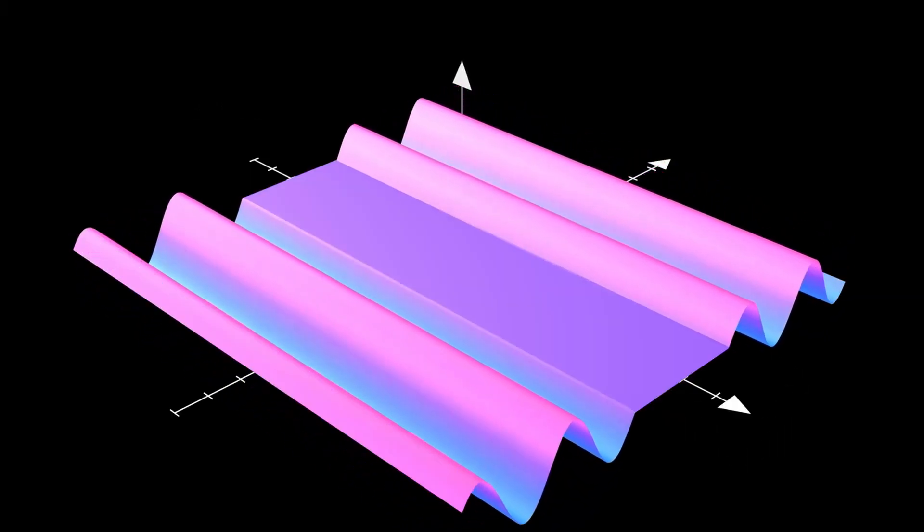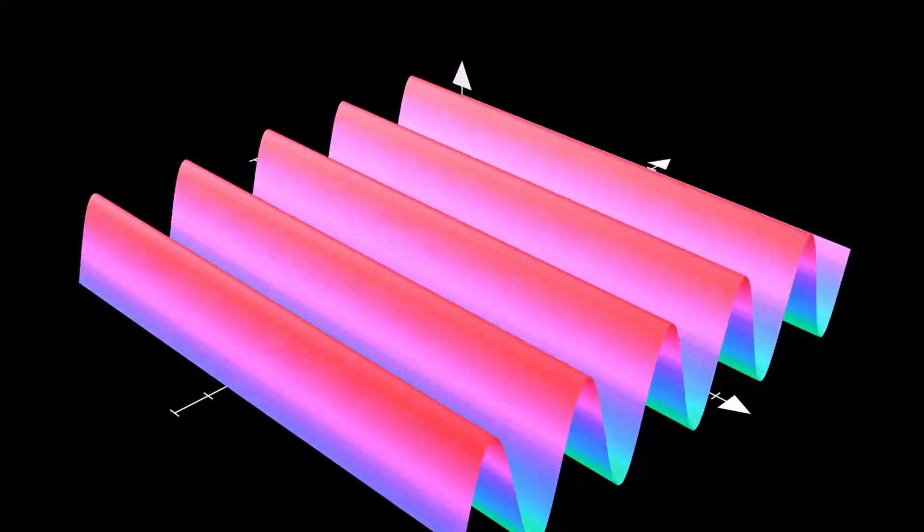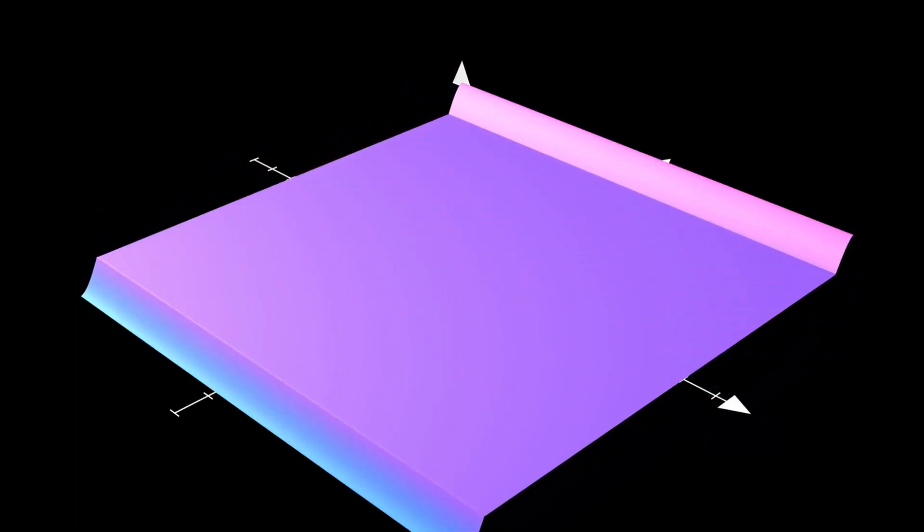Here you can see the normal modes in three dimensions on a membrane. I went with the 3D case because it is the most difficult to visualize. You can also lower them to 1D and 2D cases after seeing these 3D normal modes.